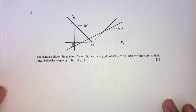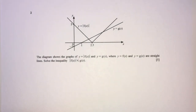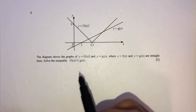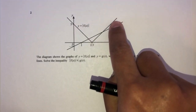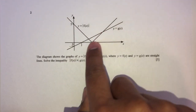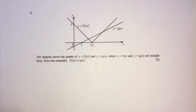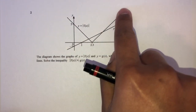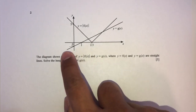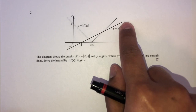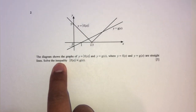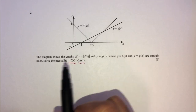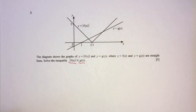Now let's move on to part 2. The diagram shows a graph of y = |f(x)|, the modulus of f. When you have these two bars around your function, it means the function cannot be negative — it is always on the top. We also have the graph of y = g(x), which is a straight line. We have to solve the inequality |f(x)| ≤ g(x).